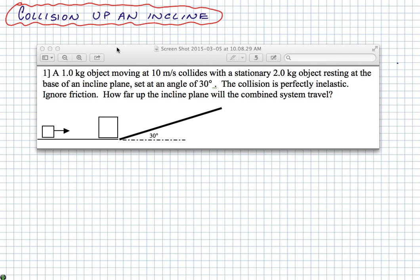So the problem says that you have a small object traveling at a constant speed of 10 meters per second, and it collides with another object which is stationary at the base of an incline. The second object is more massive, 2.0 kilograms, and it is initially at rest at the base of the incline, which is 30 degrees.